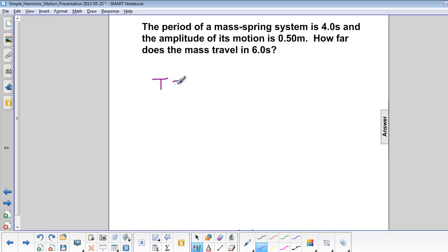So again, the period is equal to 4 seconds, the amplitude is 0.5 meters, but now the time is 6 seconds. So that means if it starts from equilibrium,